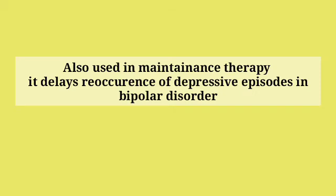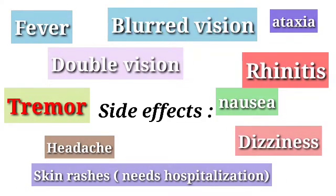Coming to the side effects: lamotrigine has many side effects which include tremors, nausea, rhinitis, ataxia (which means uncoordinated movements), blurred vision, fever, double vision (one thing appearing two times), dizziness, and headache.